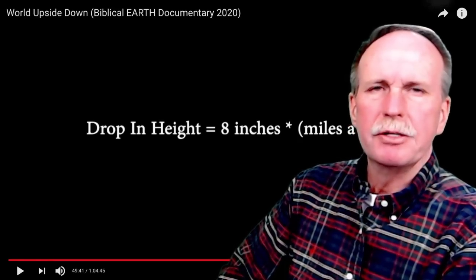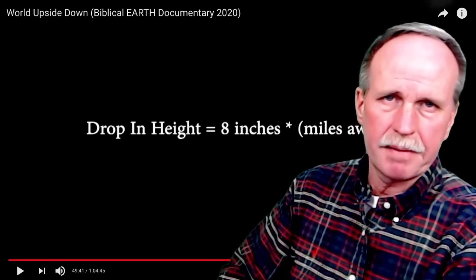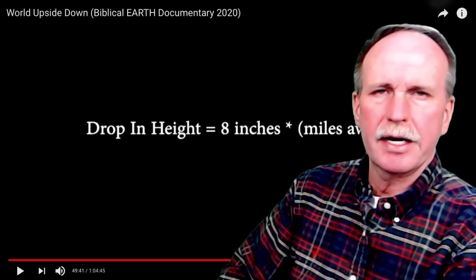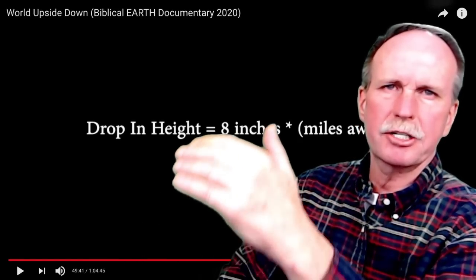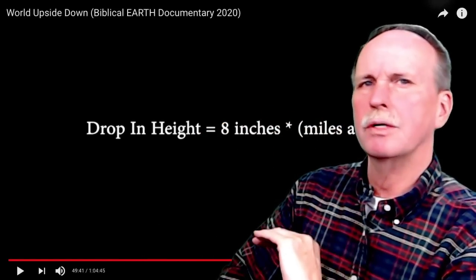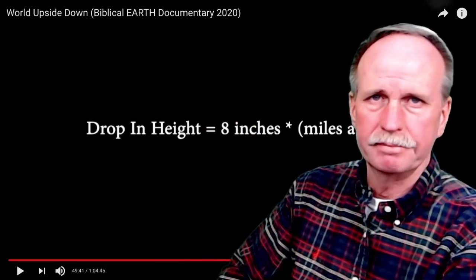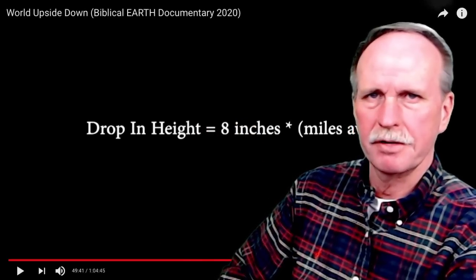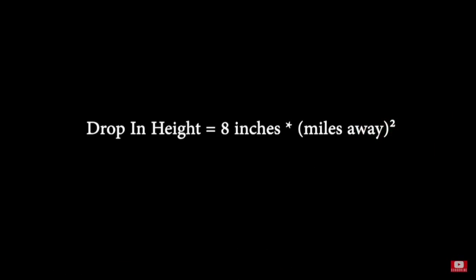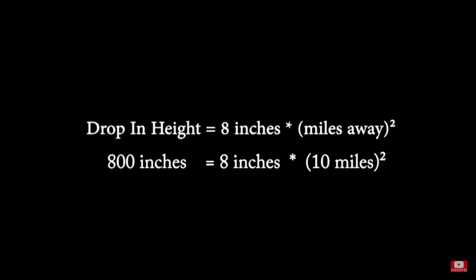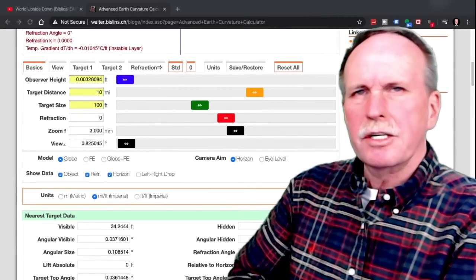Another thing you're going to have to include is the effects of atmospheric refraction. The earth does have an atmosphere, and as a result, light from distant objects actually curves upward and then downward towards our eyes, giving us the illusion that objects are higher on the horizon than they actually are. We'll see several examples of that in this video. This formula tells you how far distant objects should have dropped on a spherical earth — for example, if something were 10 miles away, it should have dropped 800 inches, or approximately 67 feet.